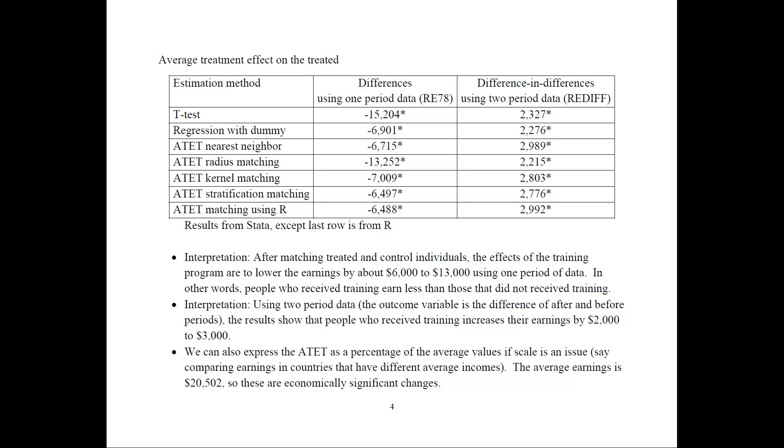For the average treatment effect on the treated, here we have several estimation methods that we are using. The first one would be a normal t-test for the outcomes of the treated and the controlled group, completely ignoring everything we learned. Here we would have the differences or the average treatment effects using the one-period data, and this would be using the two-period data. In these two examples, we're just using different dependent variables of RE78 and RE difference as the outcome variables.